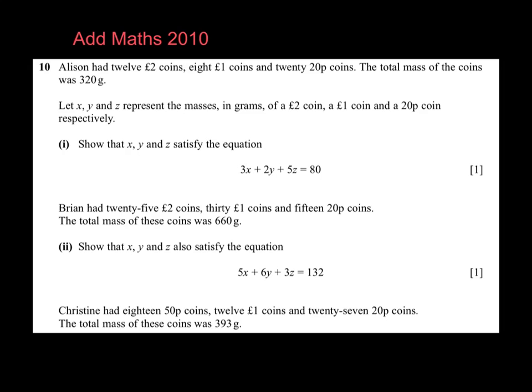Add Maths 2010 Question 1. Alison has 12 £2 coins, 8 £1 coins, and 20 20p coins, and they have to weigh 320 grams. Everything can be divided by 4.